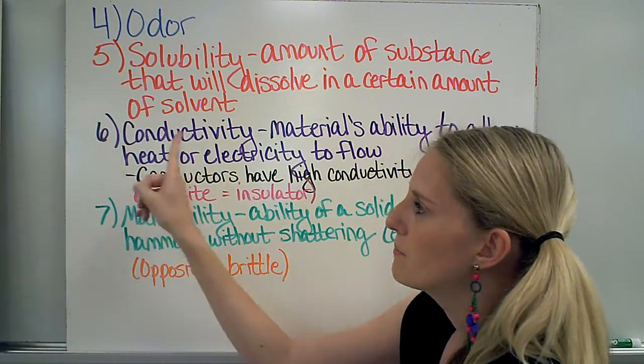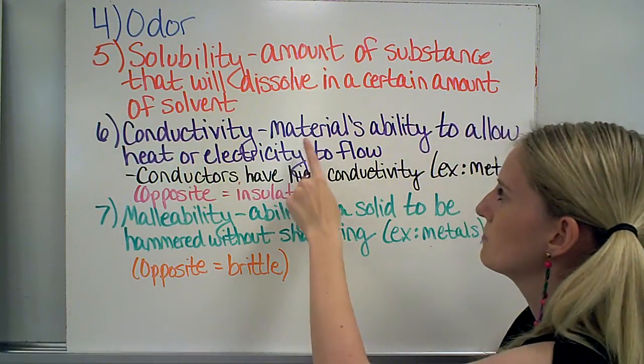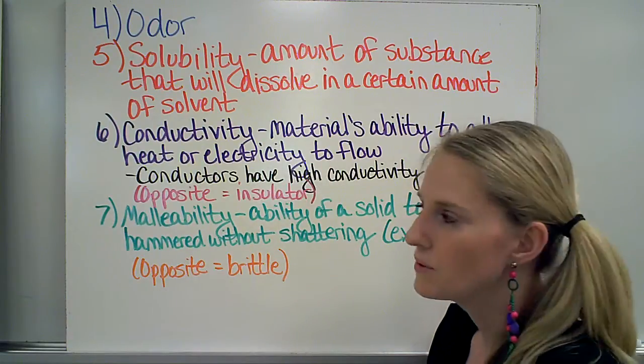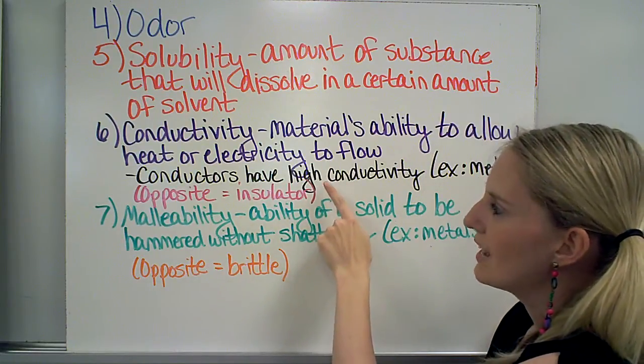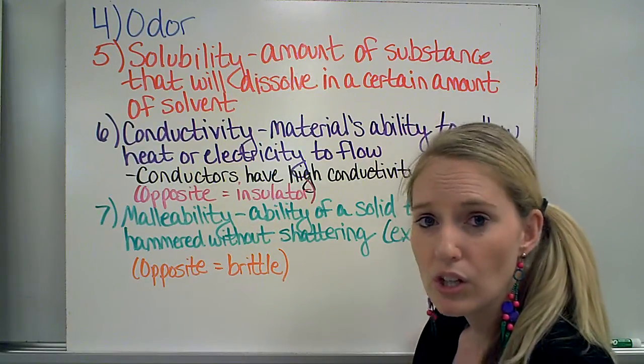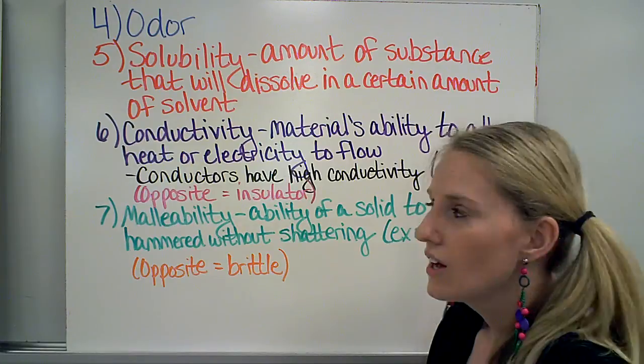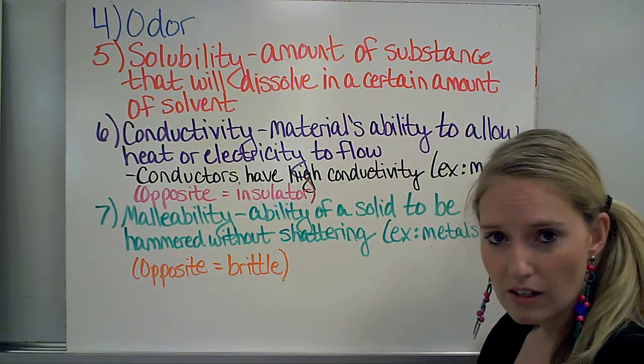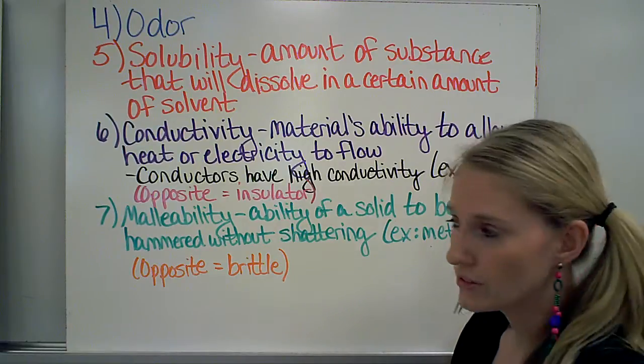Another physical property is conductivity, which is a material's ability to allow heat or electricity to flow through it. Objects that have a high conductivity are called conductors, and objects that have a low conductivity are called insulators. Objects that are good conductors are typically, or an example of them, are metals.